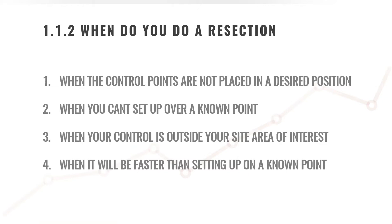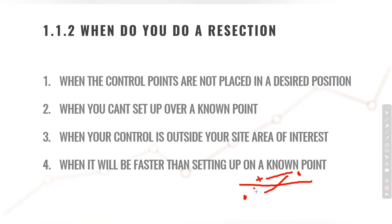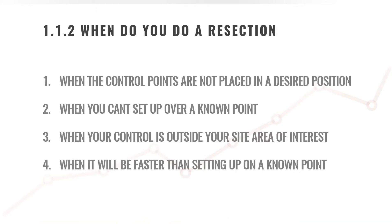A good example: say you've got a road with a control point on one side and on the other side, but you simply cannot see the two known points from each other. You'd move your total station to a position in between and do a resection — using your furthest point first, then your second point. You may also use a third point located elsewhere as an independent check to confirm that your resection was actually successful.